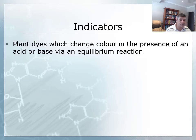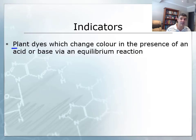But what are indicators? Well, indicators are just plant dyes which change color in the presence of an acid or base via an equilibrium reaction. So we can bring some of what we understood from the equilibrium topic into this topic to give us a little bit of an idea of what's happening with indicators.